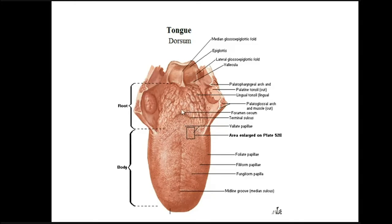The terminal sulcus divides the tongue into two portions: an anterior two-thirds called the body of the tongue, and a posterior one-third called the root of the tongue. Looking at the surface of the anterior two-thirds, you see a straight groove in the median line — this is the median groove or median sulcus — which indicates the formation of the tongue from two equal halves.